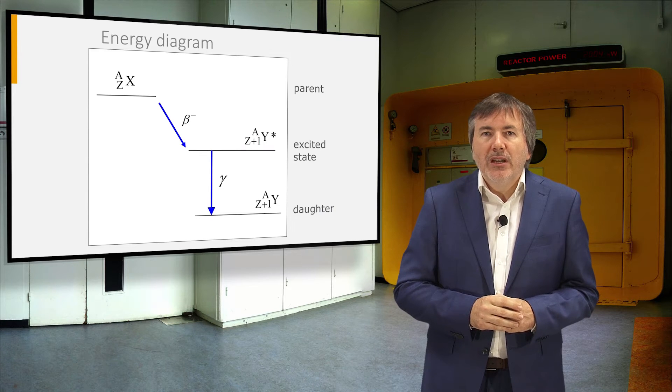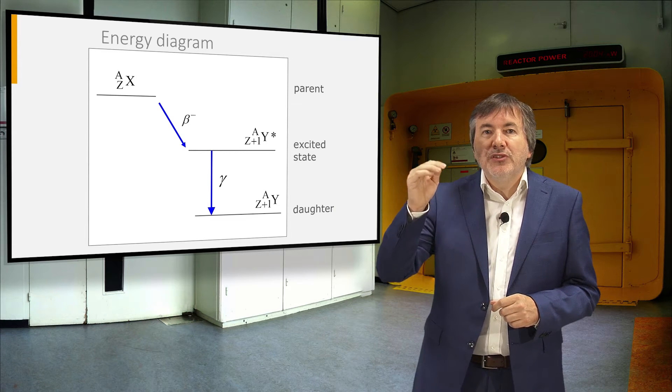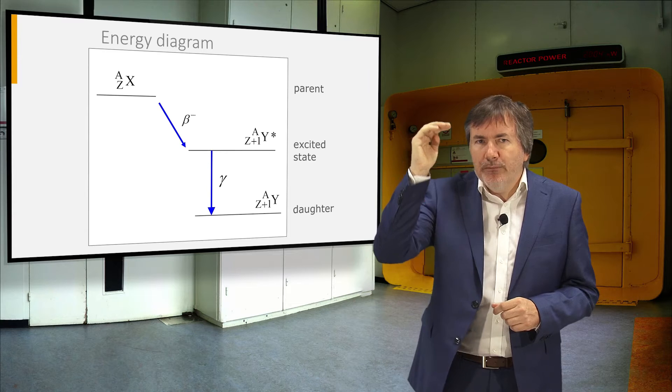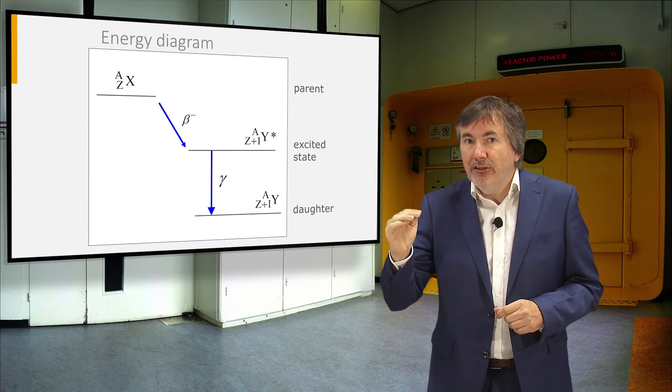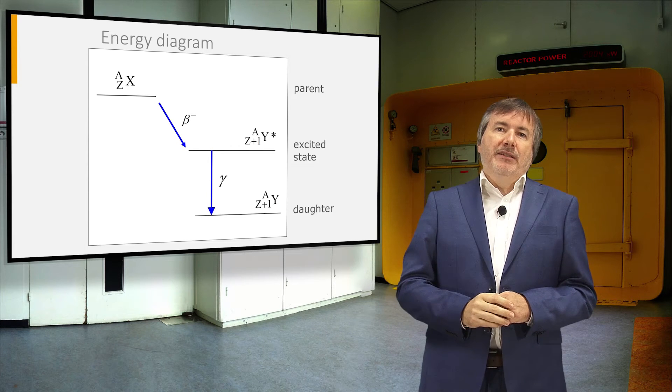In an energy diagram, we start from an unstable nuclide with a high energy, jump to a lower energy state in the daughter product, and possibly go further down by gamma transitions.